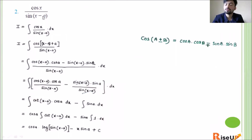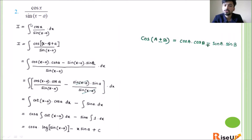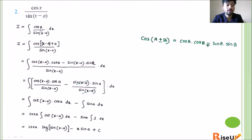Now let us look at the second question. The second and third questions are of the same type, so once you understand the second one, the third will be easy. The second question is: integrate cos x upon sin(x minus a) with respect to x. We write it as the integration of cos x upon sin(x minus a). The denominator has (x minus a).